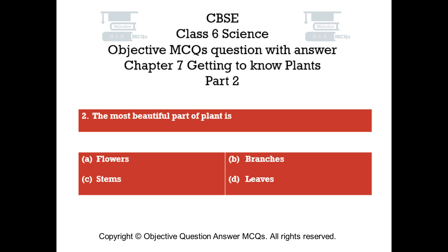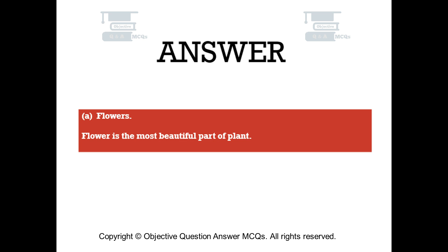Question number two. The most beautiful part of a plant is: Option A flowers. Option B branches. Option C stems. Option D leaves. The right answer is option A — flowers. Flower is the most beautiful part of a plant.